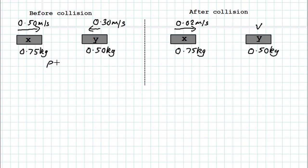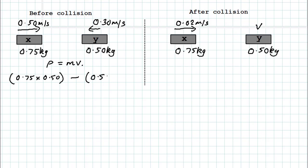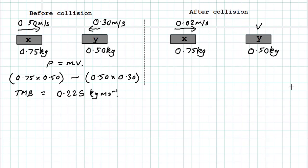Momentum of any object equals mass times velocity. For vehicle X before the collision, its momentum is 0.75 × 0.50. Because vehicle Y is moving to the left, its momentum is subtracted: 0.50 × 0.30. The total momentum before the collision is the sum of these two: 0.75 × 0.50 minus 0.50 × 0.30, which gives 0.225 kilogram meters per second.